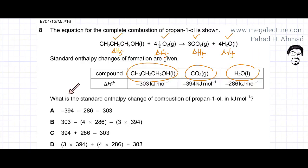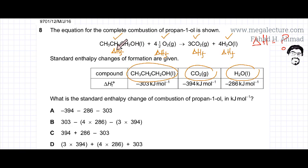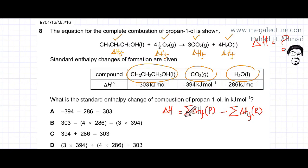Based on this, you are being asked: what is the standard enthalpy change of combustion of propane-1-ol? You can use the simple Hess's Law formula: if you have the enthalpies of formation of all your reactants and all your products, the enthalpy of the reaction equals the sum of the enthalpy of formation of products minus the sum of the enthalpy of formation of reactants.